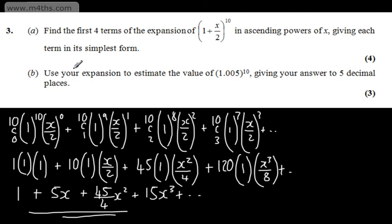In part B for 3 marks, it says use your expansion to estimate the value of (1.005)^10, giving your answer to 5 decimal places. If we just have a look at this, we can see that we've got (1 + x/2)^10, and we've got (1.005)^10. We need to find a suitable value for x, and with this particular one, we can simply say that 1 + x/2 will be equal to 1.005. Subtracting 1 from both sides, x/2 is going to be equal to 0.005. Multiplying both sides by 2, x is going to be 0.01.